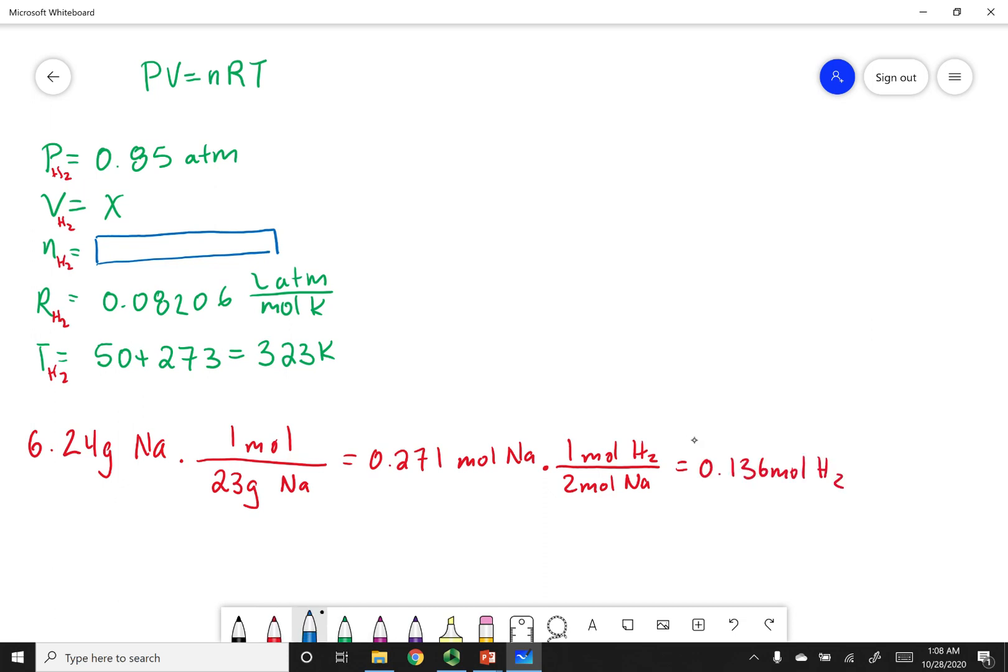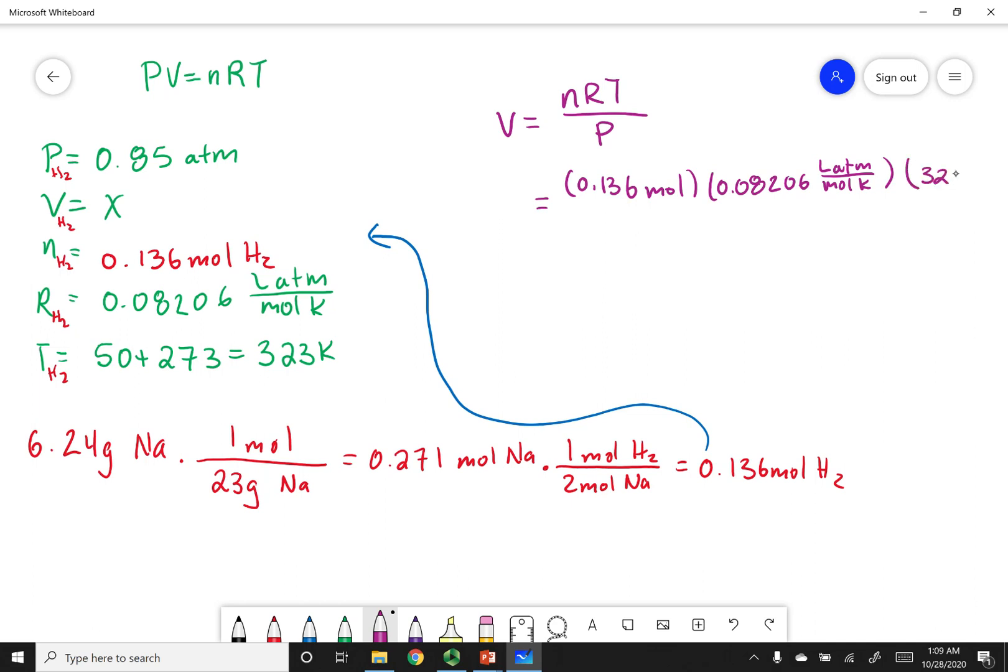Now, what I can do is I can go ahead and put this in my table. Now, what I can see is I only have one variable in PV equals nRT. So let's go ahead and solve for that. What I can do is I can divide both sides by pressure. And if I do that, I get this expression. Now, all I have to do is plug in my value. So I can plug in my n, I can plug in my r, I can plug in my temperature, and finally, I can divide by that pressure.